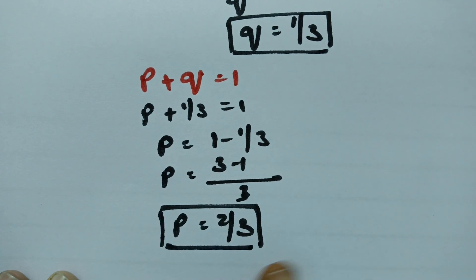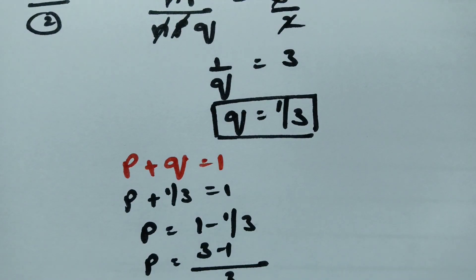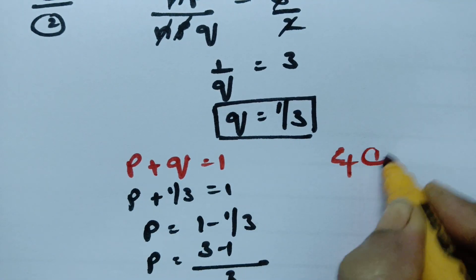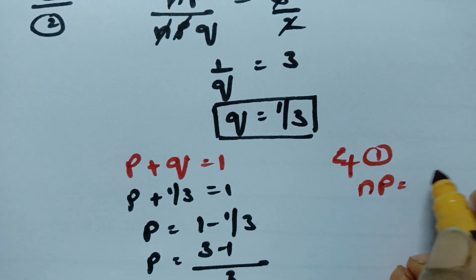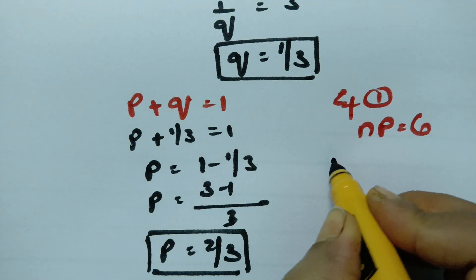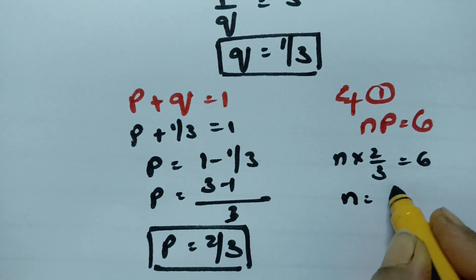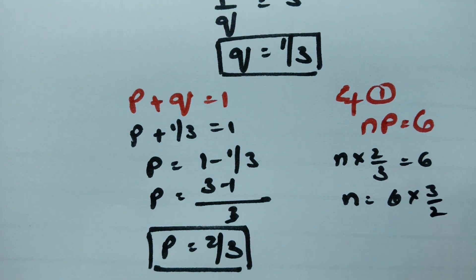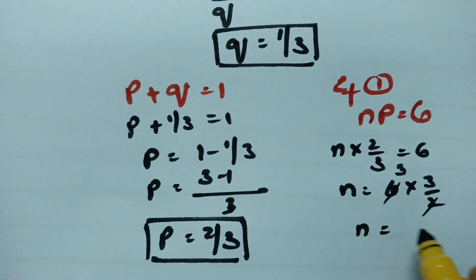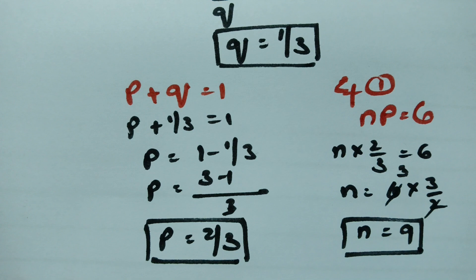After getting P, from equation 1 we have NP = 6. Substituting P = 2/3: N × (2/3) = 6, so N = 6 × (3/2) = 9. This is how we calculate P, Q, and N.